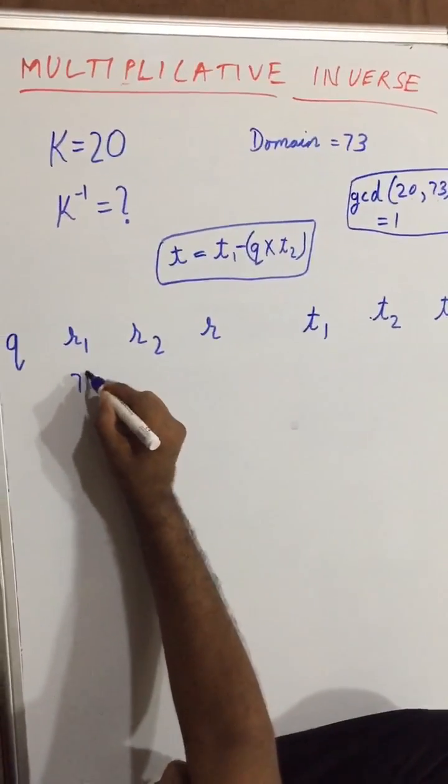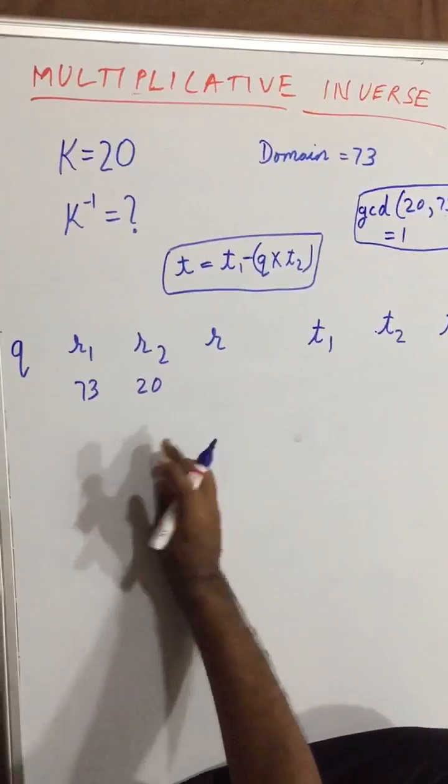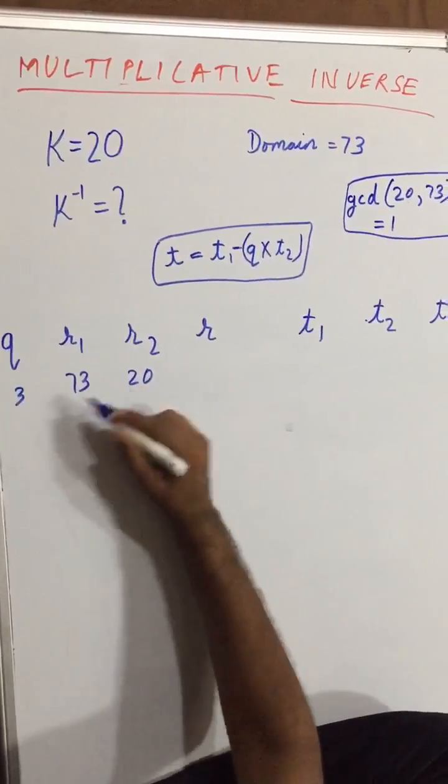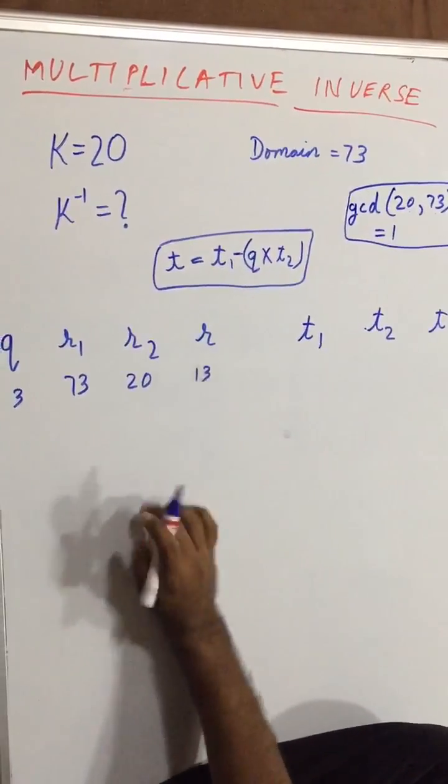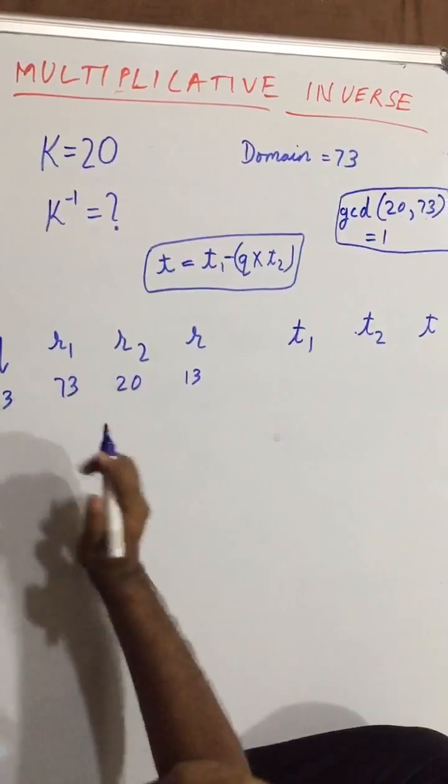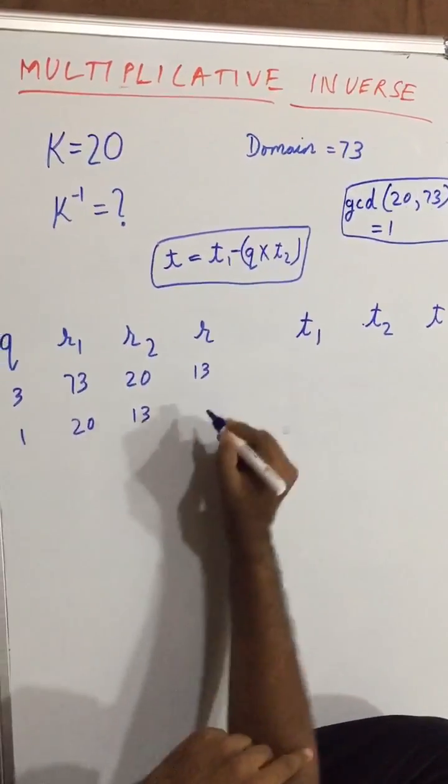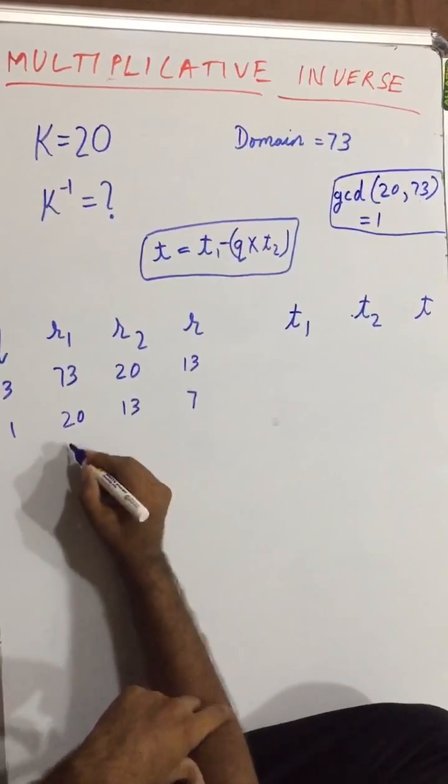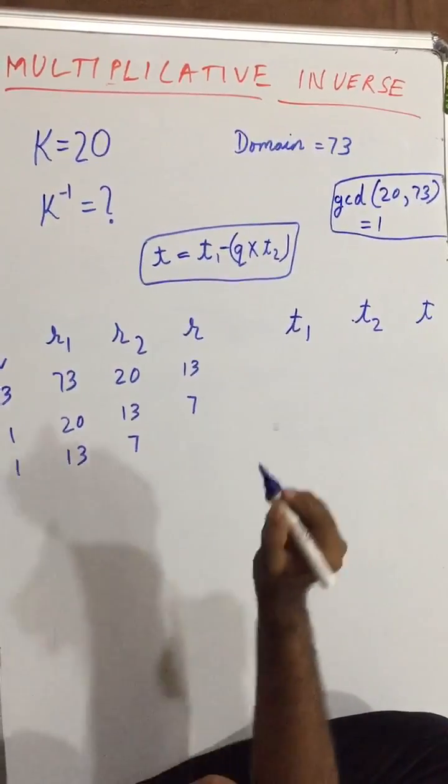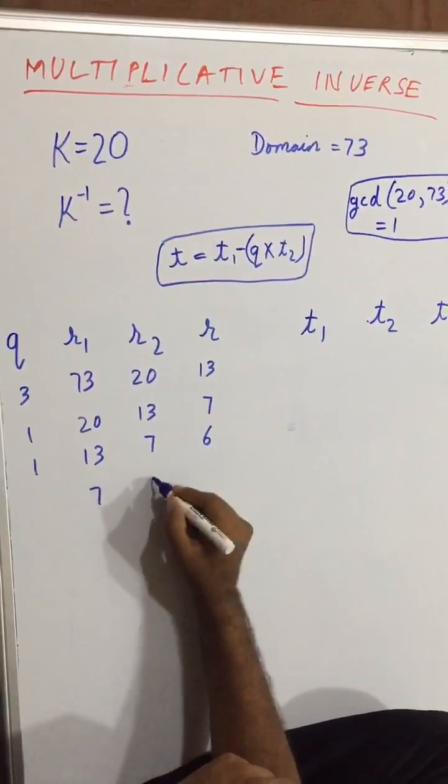Now let us take our value r1 that is 73, r2 that is 20. So 3, 23 is 60, remainder is 13. Now as we saw in Euclidean theorem we have to shift it. So 20 and 13, so 1, 7. Now 13 and 7, so 1 and the remainder will be 6.